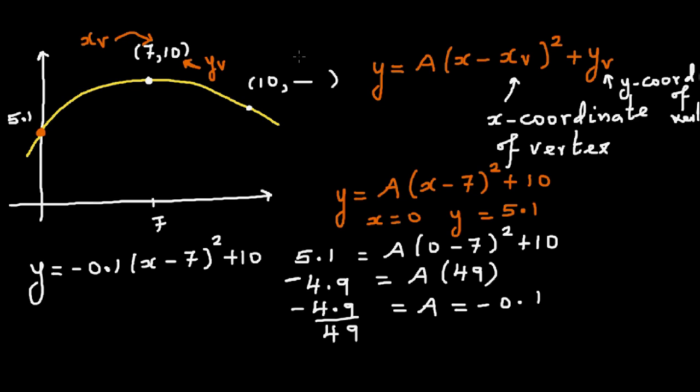So we need to answer two questions: what's the y coordinate when x is 10? And secondly, imagine this is a part of a rocket or a ball. When it was thrown, let's make up a story, it was thrown at a height of 5.1 meters. It reached the maximum height of 10 meters after 7 seconds.